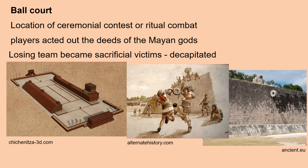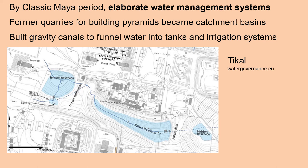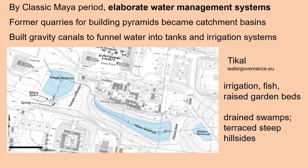The losing team often became sacrificial victims — they were decapitated. By the classic Maya period, they were building elaborate water management systems, such as part of the one at Tikal. Former quarries used for digging up limestone to build pyramids became catchment basins, and they built gravity canals to funnel water into tanks and irrigation systems. They raised fish, raised garden beds higher in elevation, drained swamps, and terraced steep hillsides.